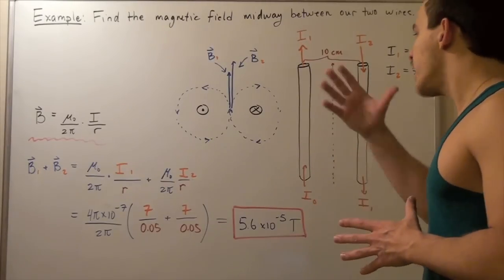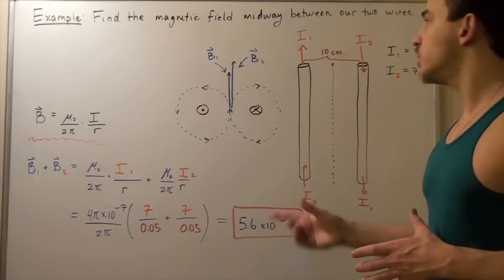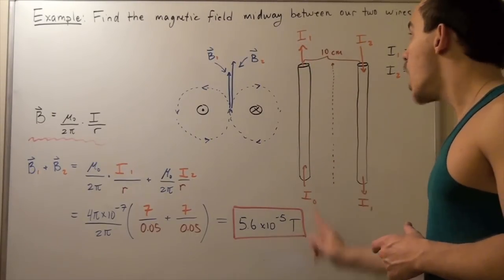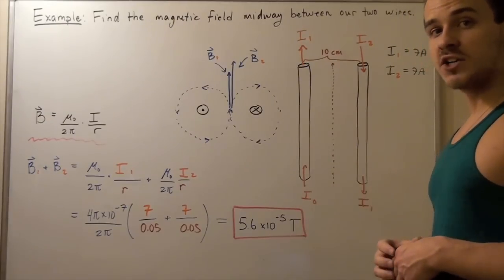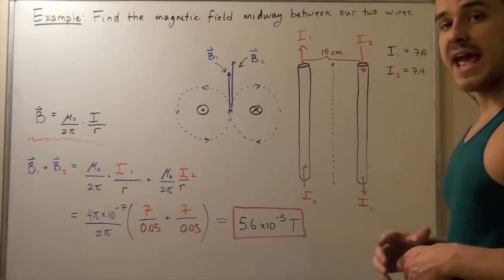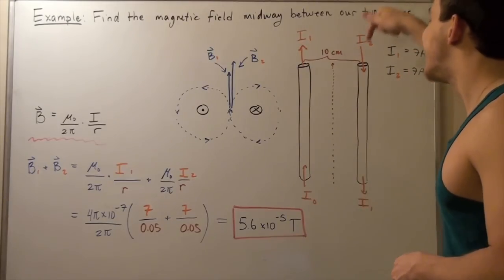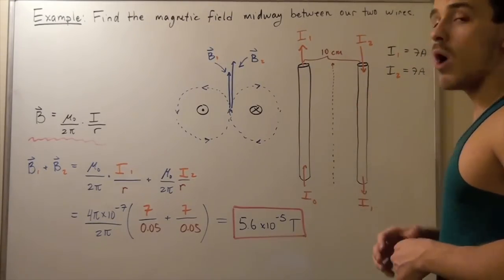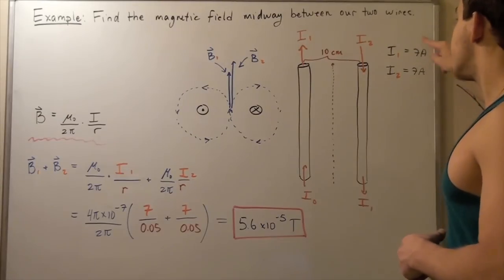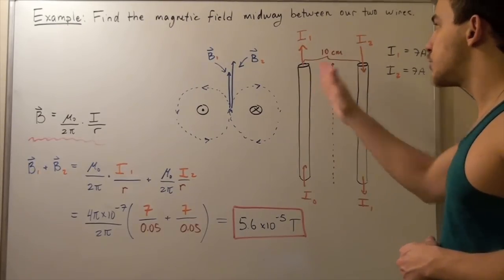Suppose that in wire one, we have an electric current, I1, that's flowing upward, and the magnitude of our current flowing upward is seven amps. And suppose I have the same magnitude of electric current flowing downward in our wire number two. So they have the same magnitude but different directions.